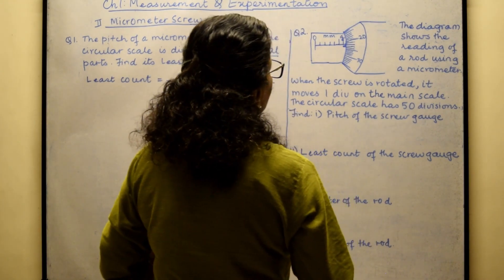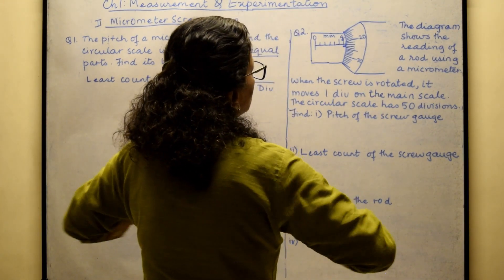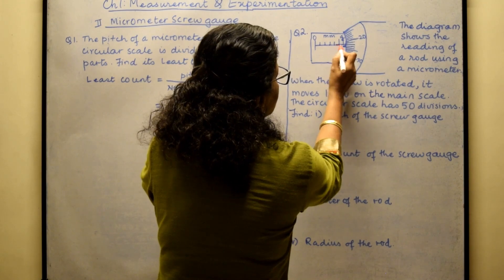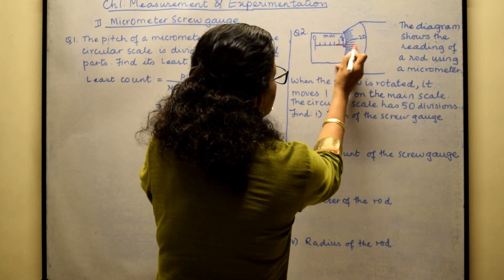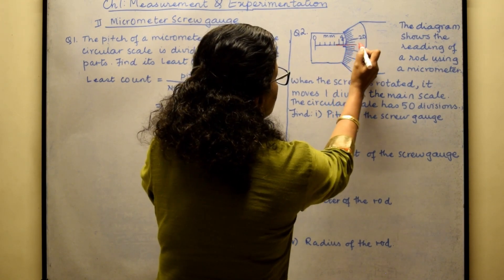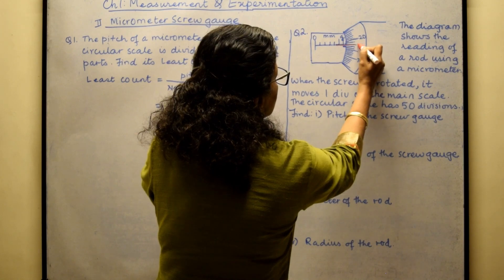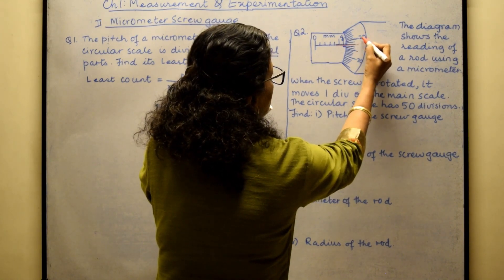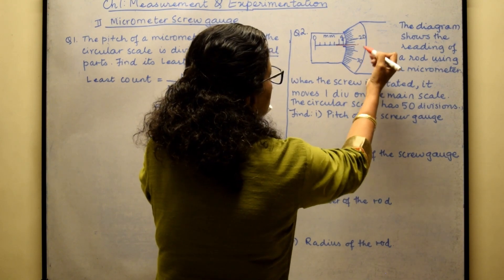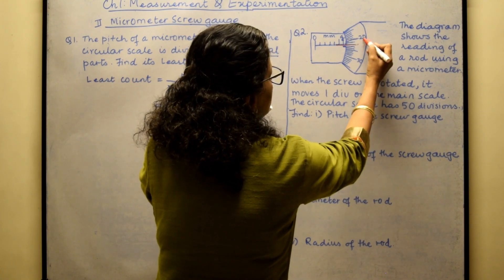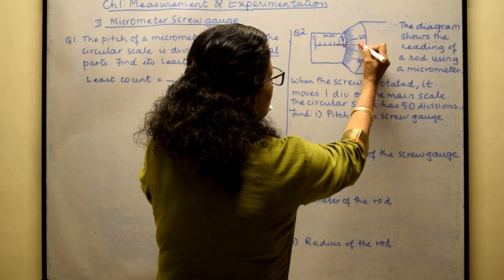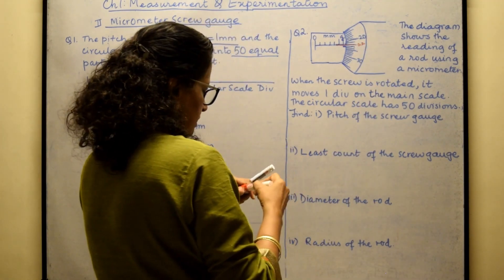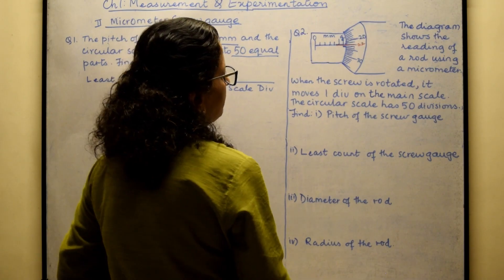For the circular scale reading, you have to see which division is coinciding with the main scale line. Looking at the diagram, this is around 20, then 30 — so this is the 21st and 22nd division. The 22nd division of the circular scale is coinciding.